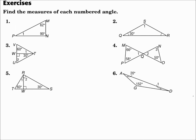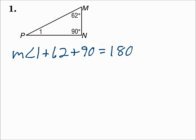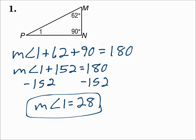Find the measures of each numbered angle. For number one, you have a triangle where you know two of the angle measures and we need to find the measure of angle one. Use the Triangle Angle Sum Theorem: the three angles of a triangle add up to equal 180. 62 plus 90 is 152, and when you subtract 152 from both sides, the measure of angle one is 28.